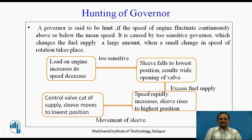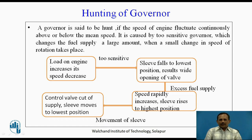Hunting of the governor: a governor is said to hunt if the speed of the engine fluctuates continuously above or below the mean speed. It is caused by a too-sensitive governor which changes the fuel supply by a large amount when a small change in speed of rotation takes place. For example, when the load on the engine increases and the speed decreases, if the governor is too sensitive, the sleeve falls to its lowest position, and as a result the throttle valve gets opened widely and a large amount of fuel is supplied to the engine.